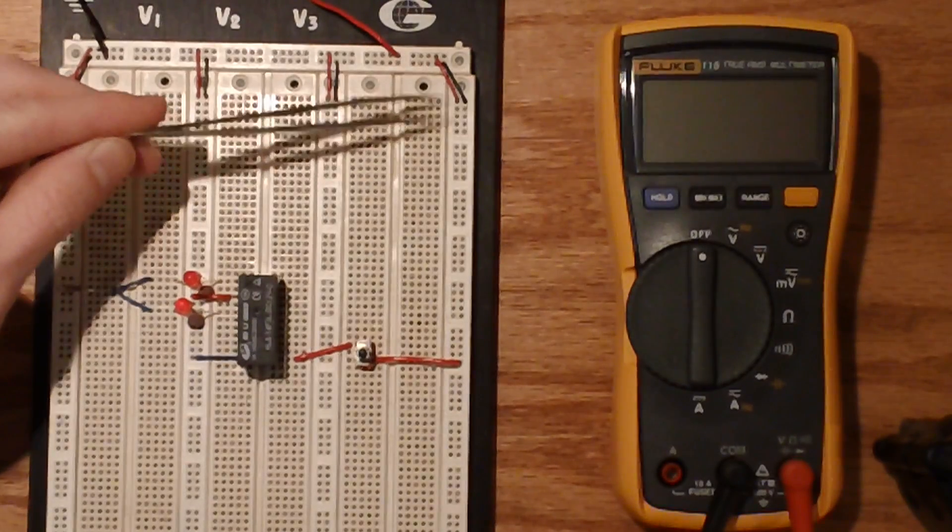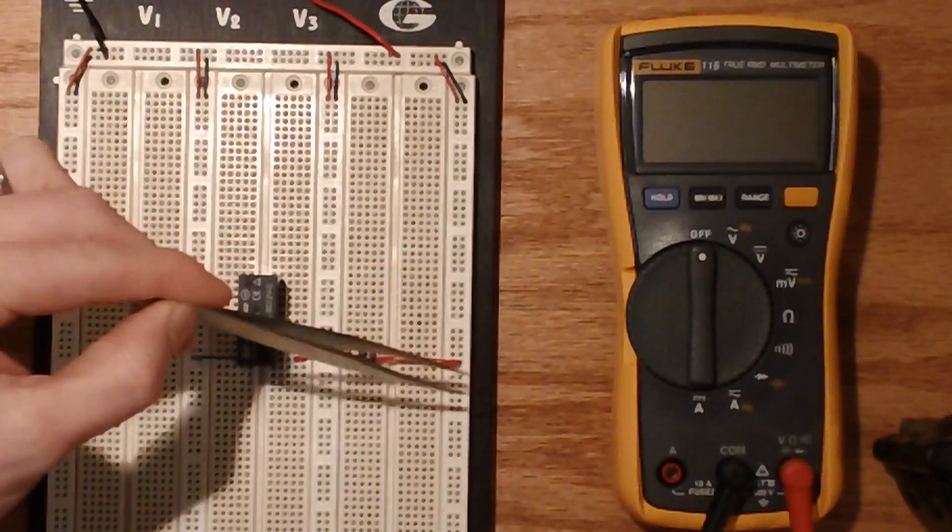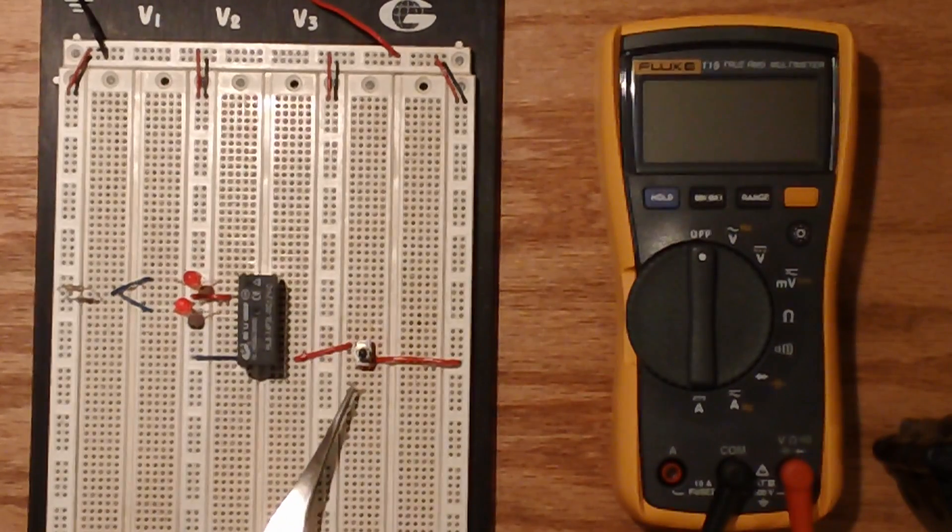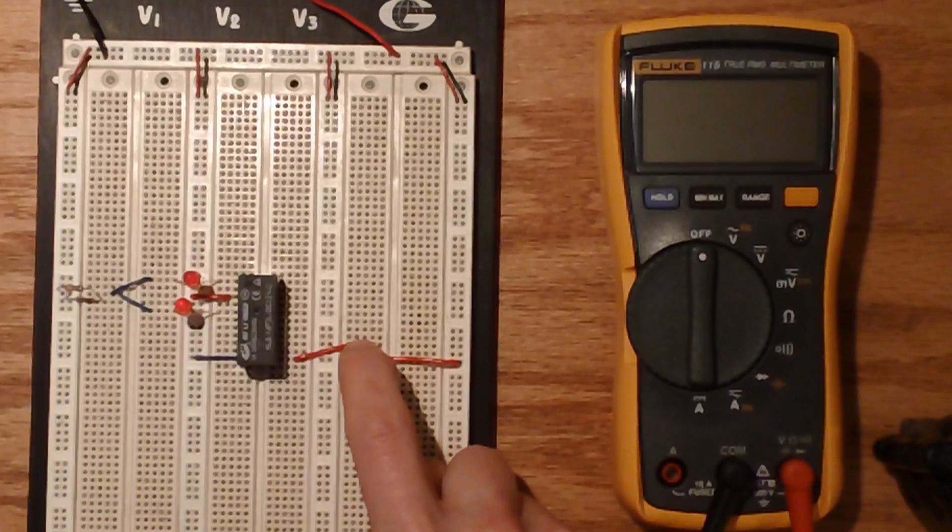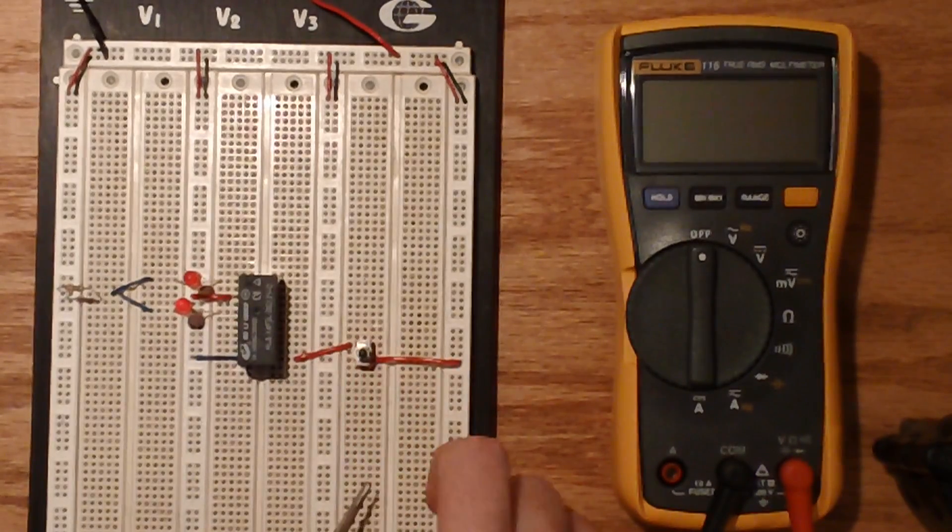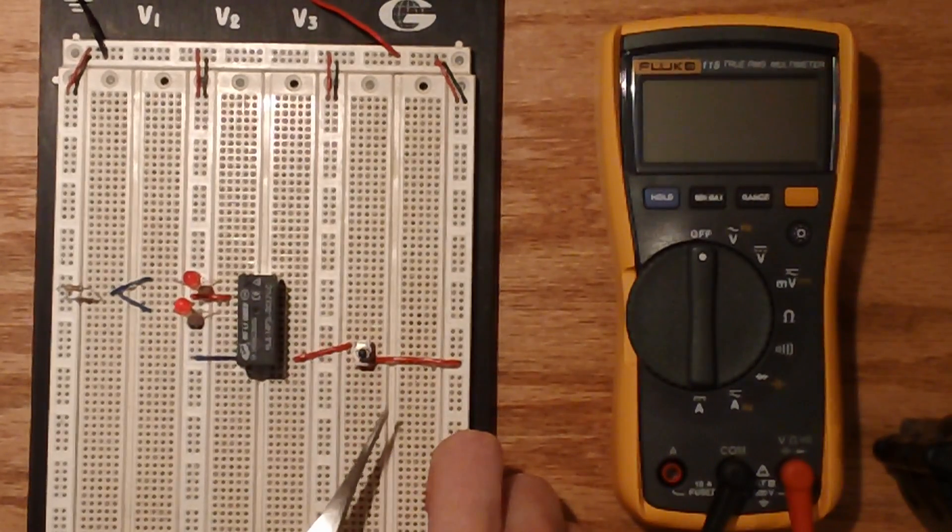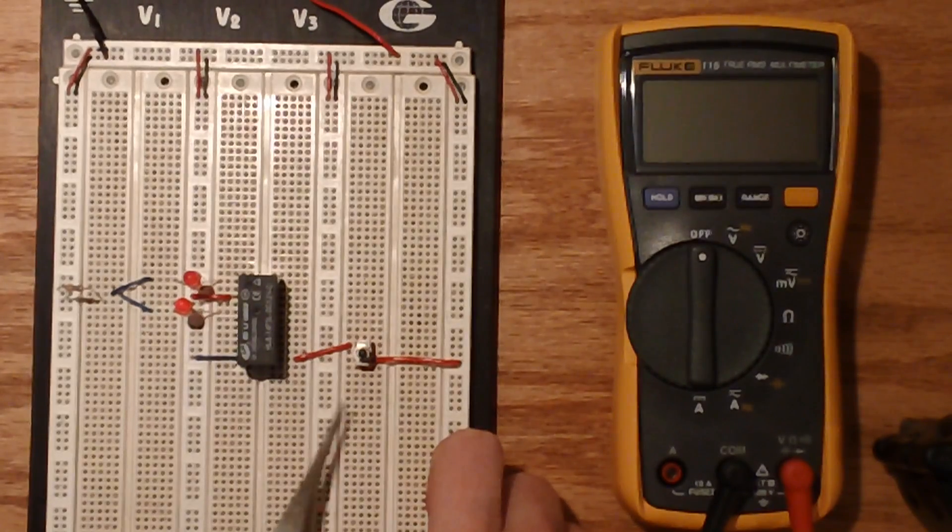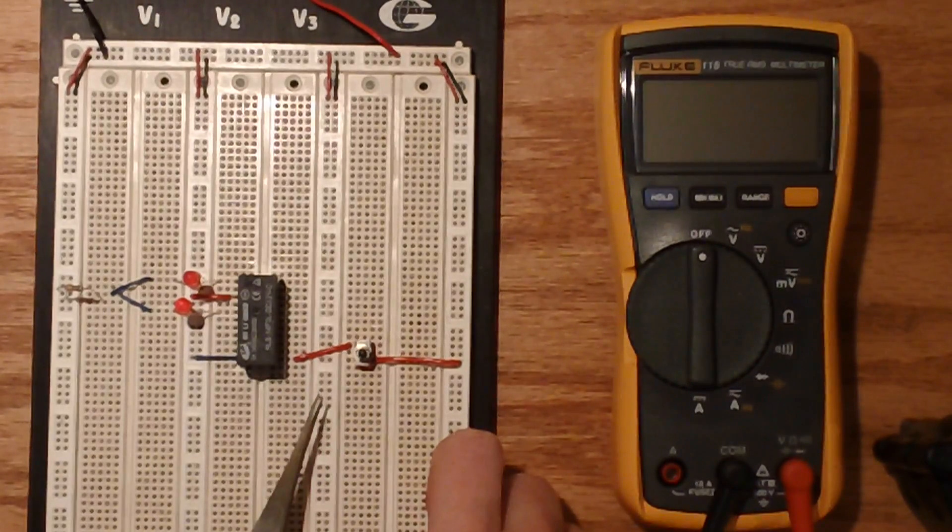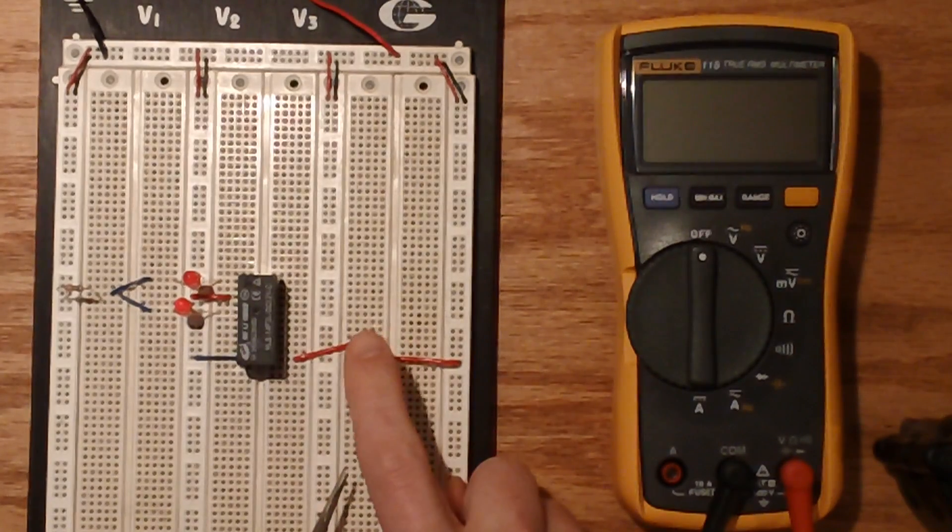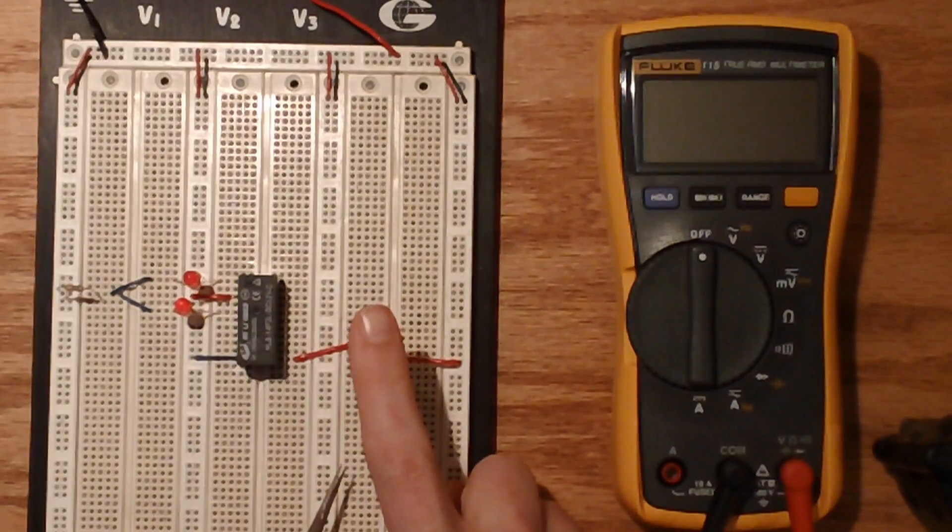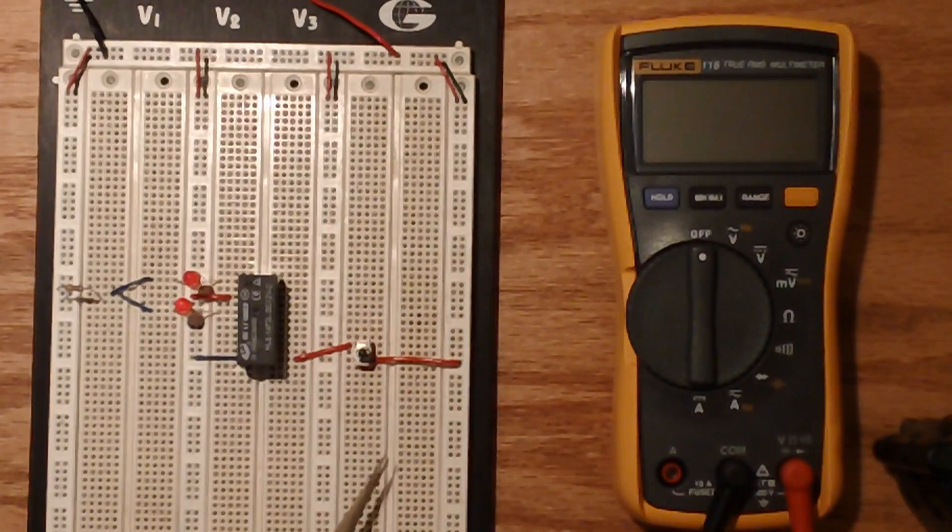So the current will flow through here and here we have a momentary switch. When this guy is pushed down, this current will be connected. When he's not pressed down, the current will not be connected.